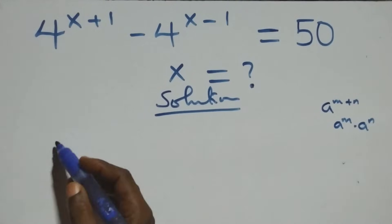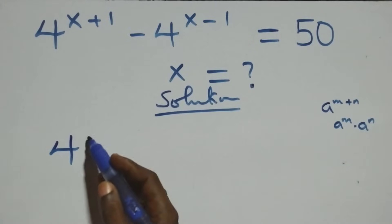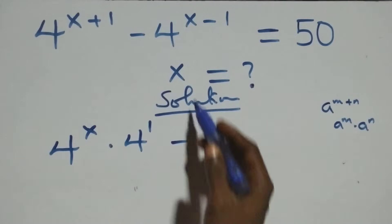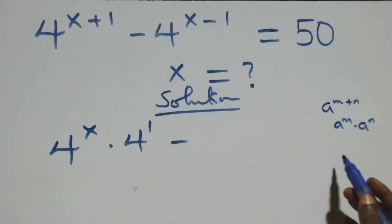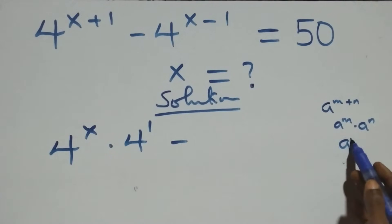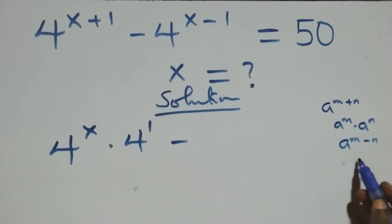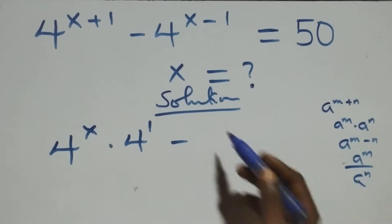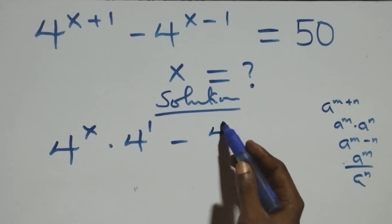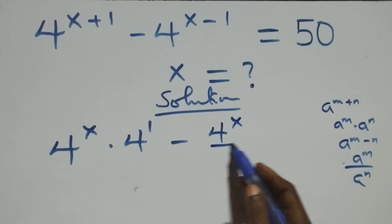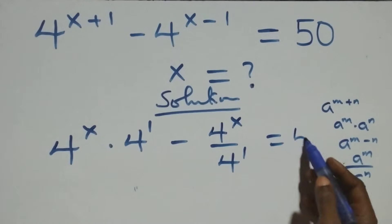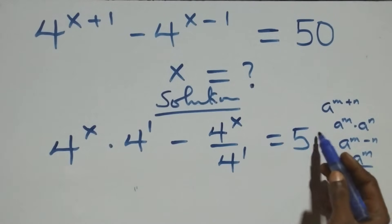Here we have 4 raised to power x times 4 raised to power 1, then minus. Also, a raised to power n minus n is the same thing as a raised to power n over a raised to power n. So this becomes 4 raised to power x over 4 raised to power 1, then equals 50 on this side.